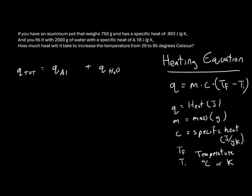Each of these heats will have its own heating equation. Therefore we write: heat for aluminum is mass of aluminum times specific heat of aluminum times (T final minus T initial), plus heat for water, which is mass of water times specific heat of water times (T final minus T initial).